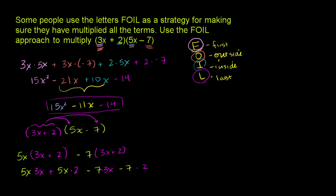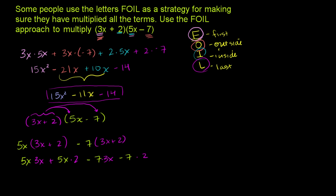And what do we get? Scroll down a little bit. I'll do these in a neutral color. We get 5x times 3x is 15x squared. 5x times 2 is 10x. 7 times 3x is minus 21x. And then negative 7 times 2 is minus 14.